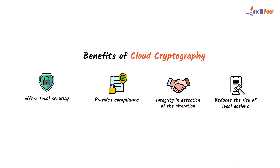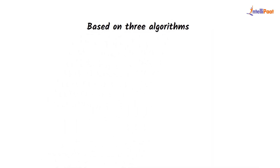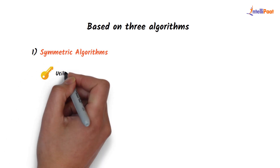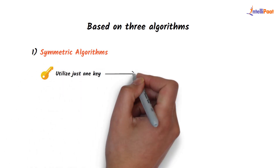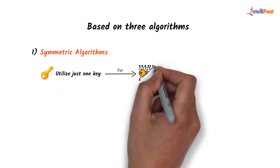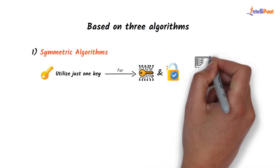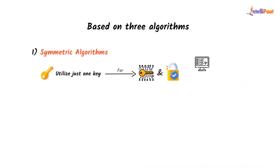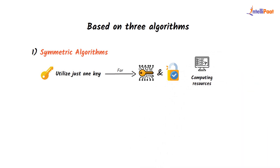Now let's discuss the algorithms on which cloud cryptography is based. The first one is symmetric algorithms. They utilize just one key both for encryption as well as decryption of data. Symmetric algorithms don't need a lot of computing resources and work exceptionally fast in encryption.